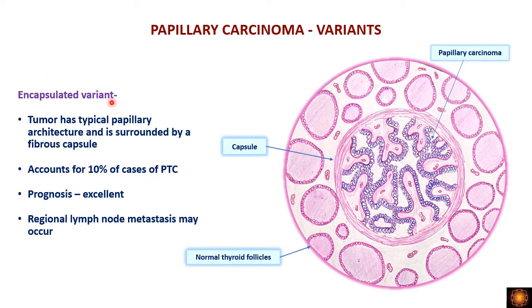The encapsulated variant shows a clearly capsulated lesion with complex branching papillae lined by tumor cells having typical features of conventional PTC. The tumor is completely encapsulated and has an excellent prognosis, although regional lymph node metastasis can sometimes be found even in this variant.